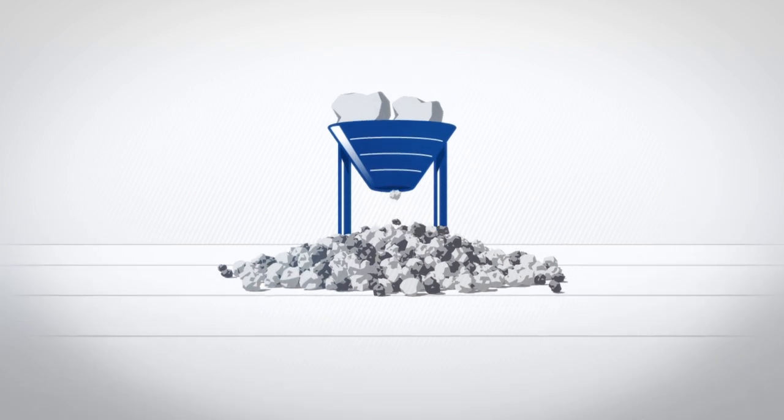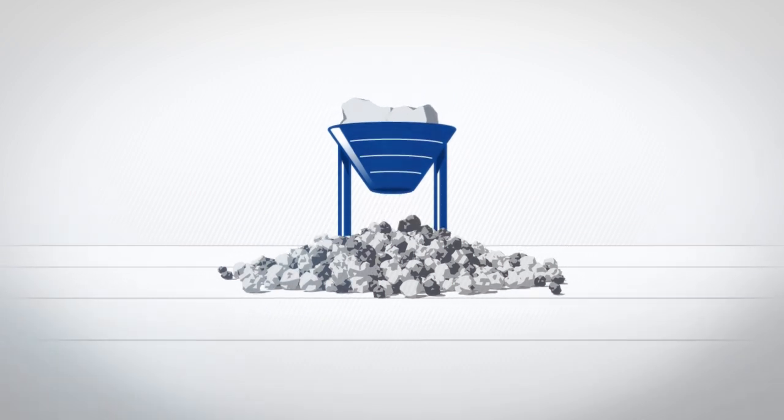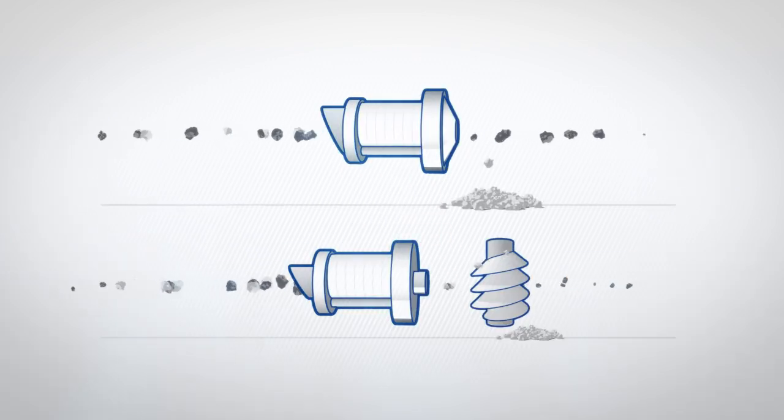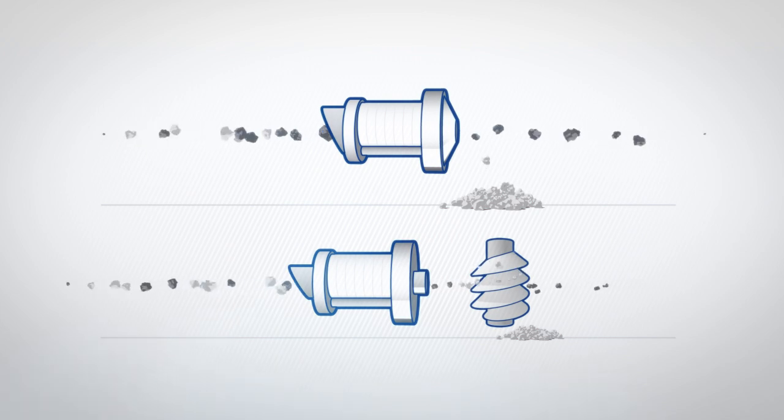At the surface, chromite ore is crushed again and concentrated into upgraded lumpy ore and fine concentrate. In the first stage, upgraded lumpy ore is produced by using heavy-medium drum separators.